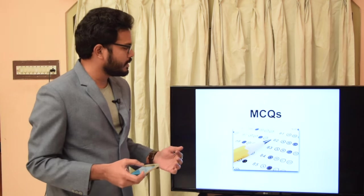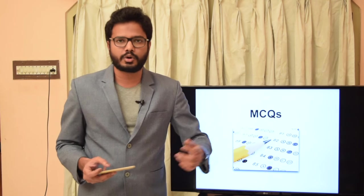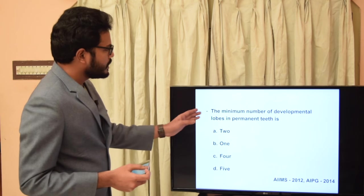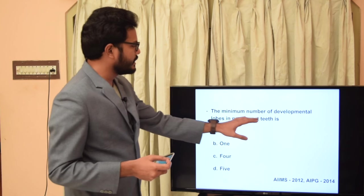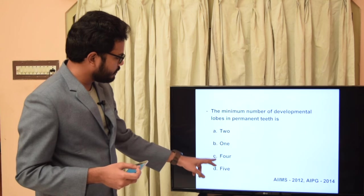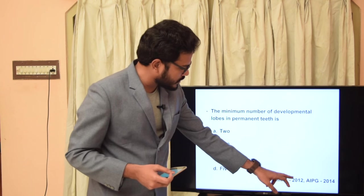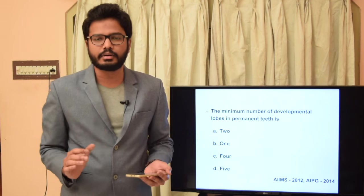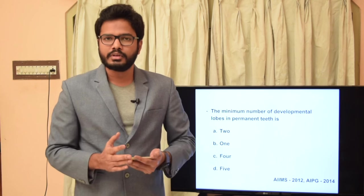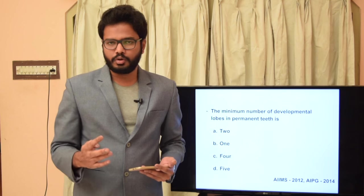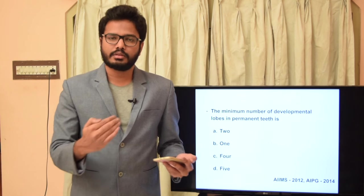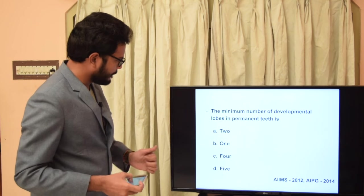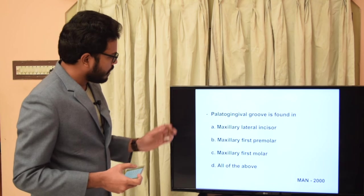Now let's discuss multiple choice questions. The first question: the minimum number of developmental lobes in permanent teeth is 2, 4, 5, or 1? Asked in AIIMS 2012 and AIPG 2014. As mentioned in the table, the minimum number of lobes for development of permanent teeth is 4. In case of primary teeth, primary incisors develop from a single lobe. The answer is 4.